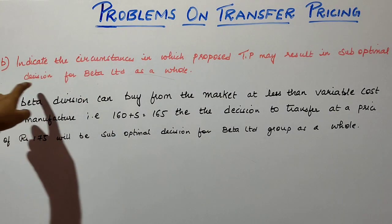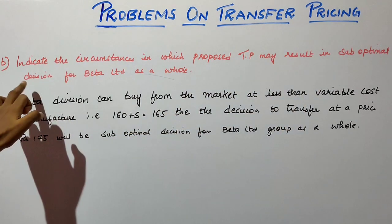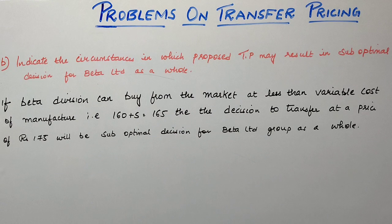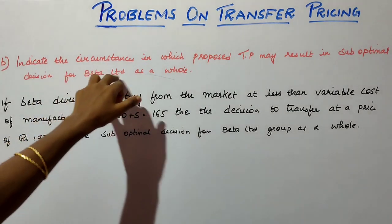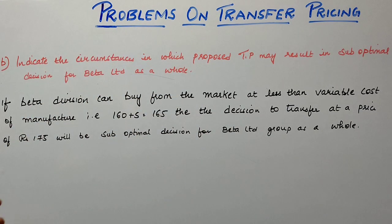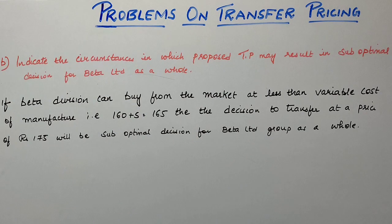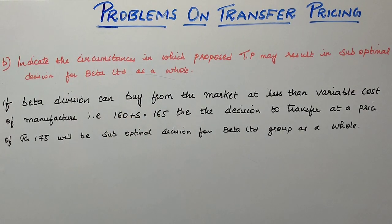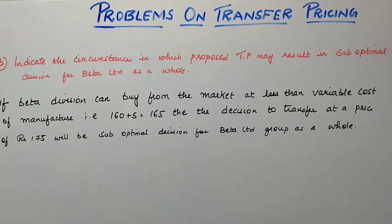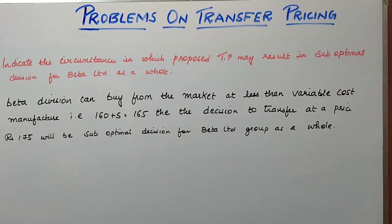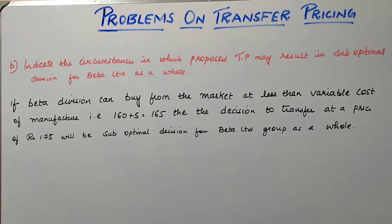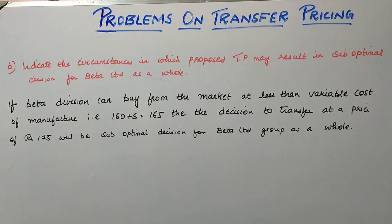The second part asks for circumstances in which the proposed transfer price may result in a suboptimal decision for Beta Limited as a whole. If Beta can procure the same product from the market at less than the variable cost of 160 plus extra variable cost of 5, that is less than 165 rupees per unit, then the proposed transfer price of 175 will result in a wrong or suboptimal decision for the company. I hope the problem is clear — try to understand and practice it.